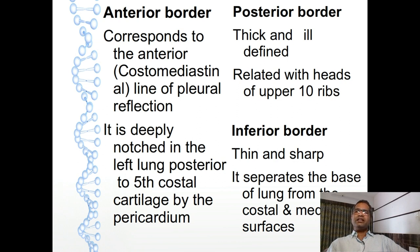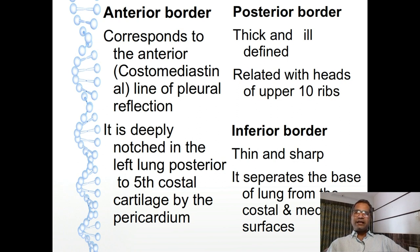Posterior border is a rounded, ill-defined border and it comes in relation with the heads of upper 10 ribs. The last border is inferior border - it is a thin and sharp border. This border separates the base of lung from costal and medial surfaces. This inferior border also comes in relation with the costo-diaphragmatic recess of pleura. We can see here all these parts of lungs including surfaces, apex, base, and borders.